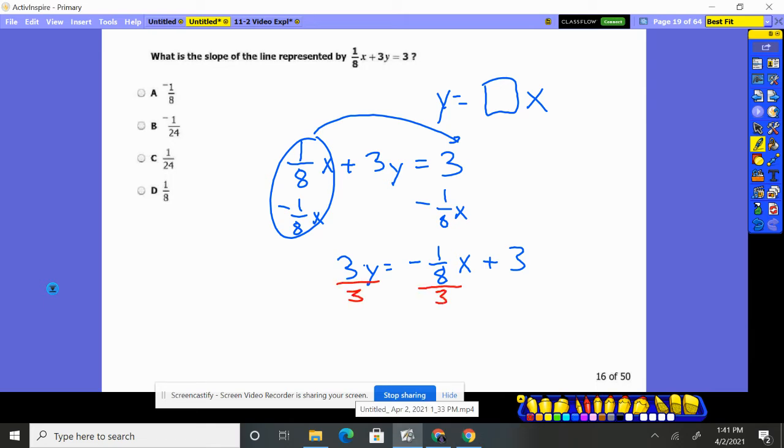So we're dividing this guy by 3. Now technically, we're dividing every piece by 3. If I take an 8th and I divide it into 3 more parts, it's getting even smaller.